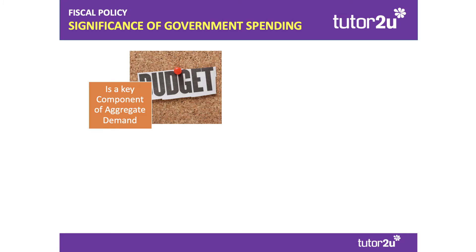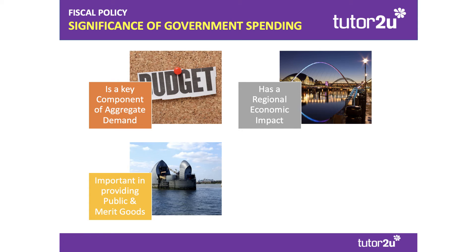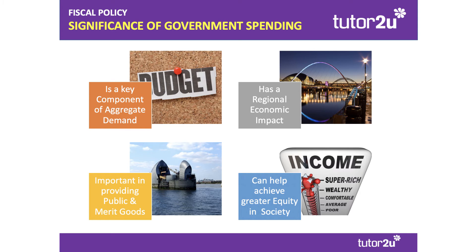Government spending is significant for most, in fact all, modern economies. Some countries have a very high level of government spending as a share of GDP. It's a key component of aggregate demand in terms of generating demand for goods and services and sustaining jobs. Government spending also has quite a big regional economic impact — a government might try to increase spending in areas where unemployment and per capita incomes are lower. It's also important to replace the market where the free market doesn't provide or under-provides public and merit goods. And government spending can have a significant impact on household income and the distribution of income across different parts of the population.